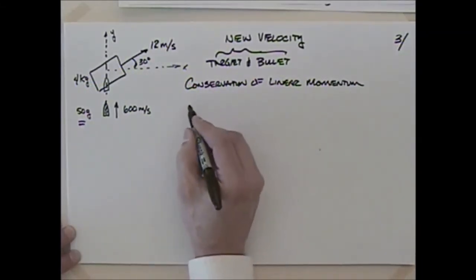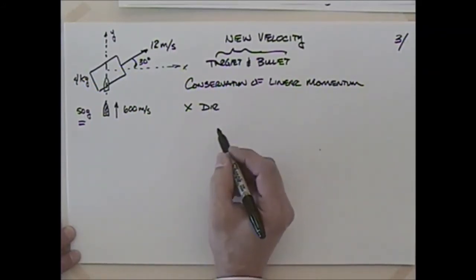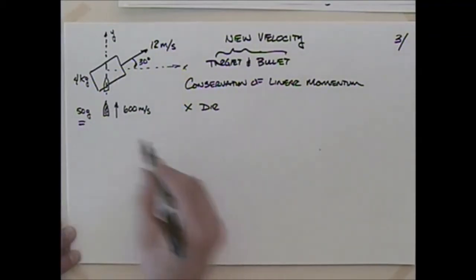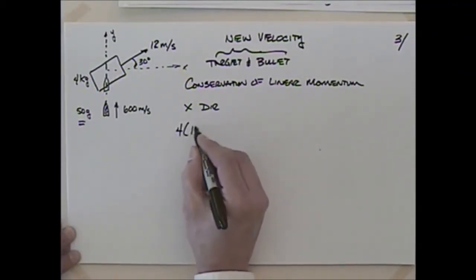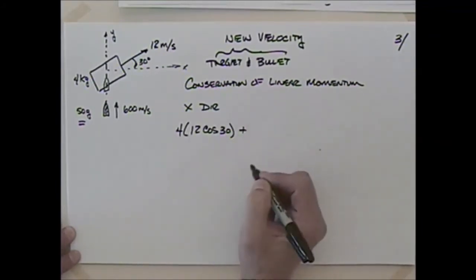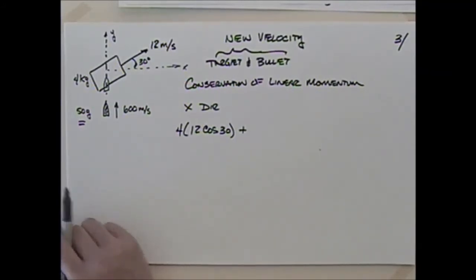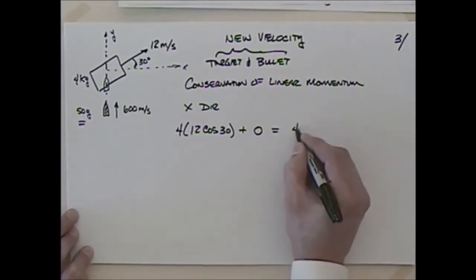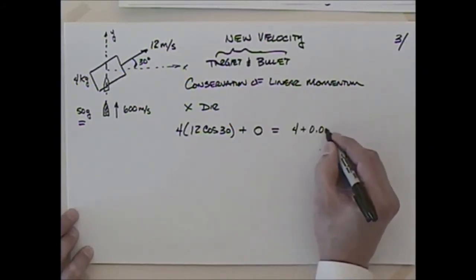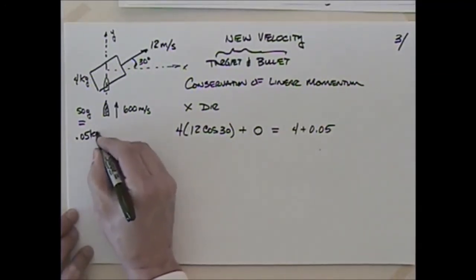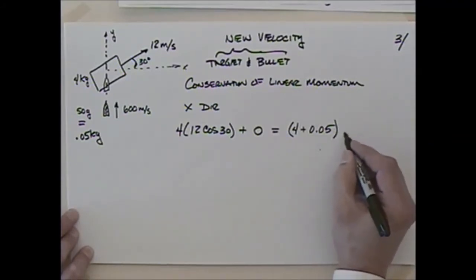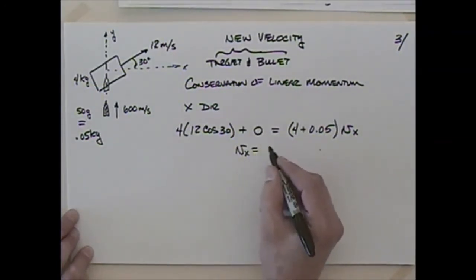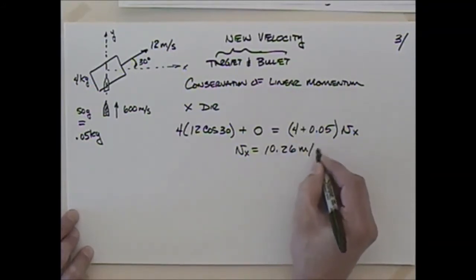Applying conservation of linear momentum in the x direction: the target has momentum 4 × 12 · cos(30°), and the bullet has zero x-momentum since it's moving purely vertically. This equals (4 + 0.05) kilograms times Vx. Solving, Vx turns out to be 10.26 meters per second.